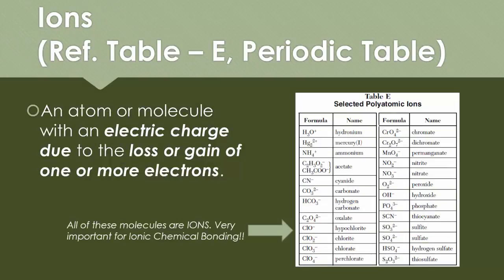Right off the bat, we should be looking at reference table E and our periodic table. If you're looking at reference table E, you'll notice that atoms or molecules with an electrical charge represent the fact that they have either lost or gained one or more electrons. Everything on table E, by example, are molecules and they are ions. These on table E are going to be very important for chemical bonding.